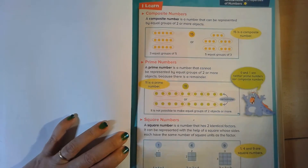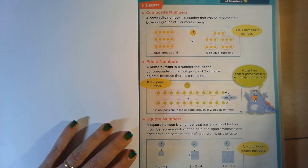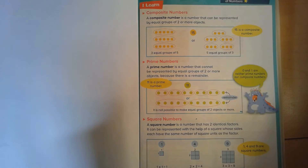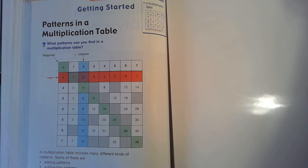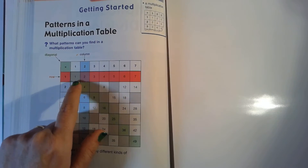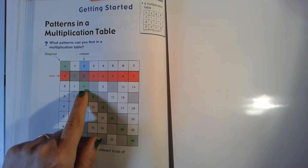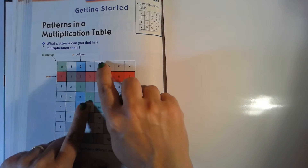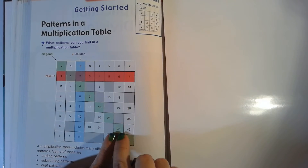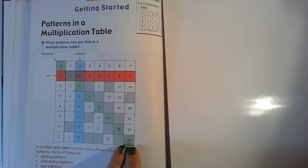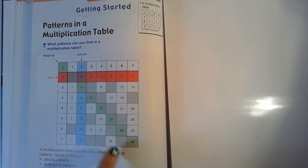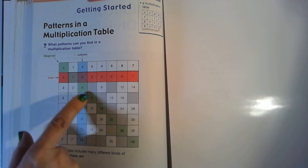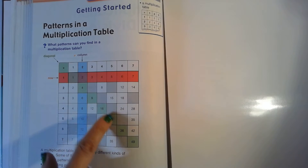So now you should understand what composite numbers are, prime numbers, and square numbers. I just want to show you something else. If you look at a multiplication table, when we're talking about square numbers, look at this: one times one is one, two times two is four, three times three is nine, four times four is 16, five times five is 25, six times six is 36, and seven times seven is 49. So our square numbers — 1, 4, 9, 16, 25, 36, and 49 — are diagonal numbers in our multiplication table.